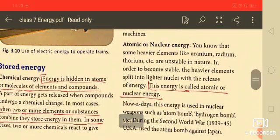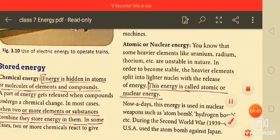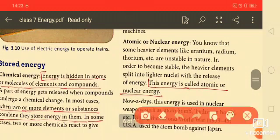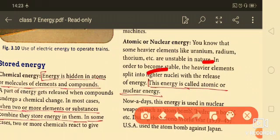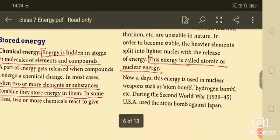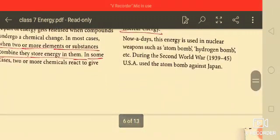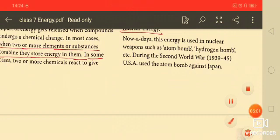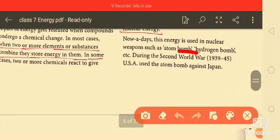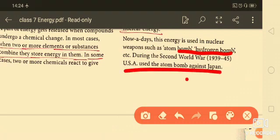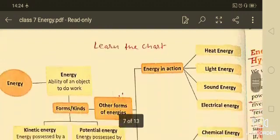Now, atomic or nuclear energy, you know that some heavier elements like uranium, radium, thorium, et cetera are unstable in nature. In order to become stable, the heavier elements split into lighter nuclei and release energy. This energy is called the atomic energy or nuclear energy. You know that nowadays, this energy is used in nuclear weapons such as atom bombs, hydrogen bombs and during the Second World War in 1939 to 1945 USA used the atom bomb against Japan.